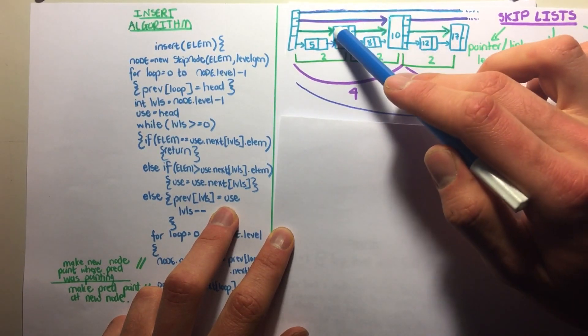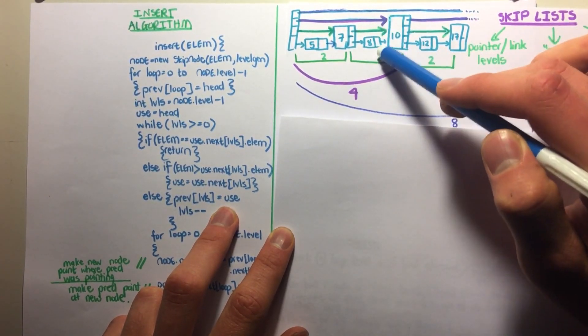So the previous there will be that. The previous will be 7, and the previous will be 8, and 9 will be inserted here.